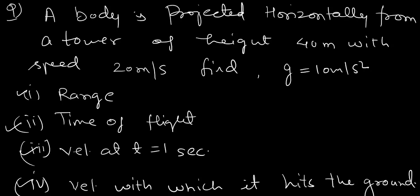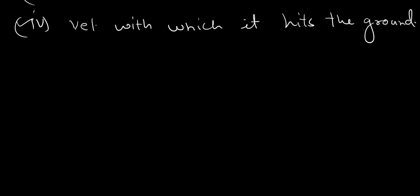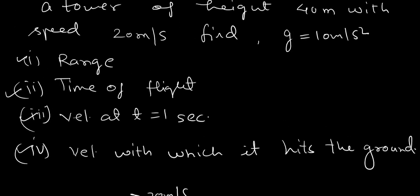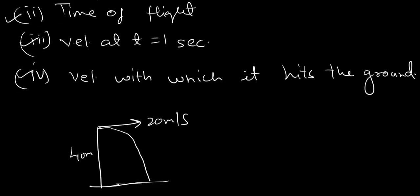So, question says that a projectile is horizontally from 40 meter height of the tower. This is a projectile from 40 meter height of the tower, which is 20 meter per second, then find out some things, first thing is range, second thing is time of flight.